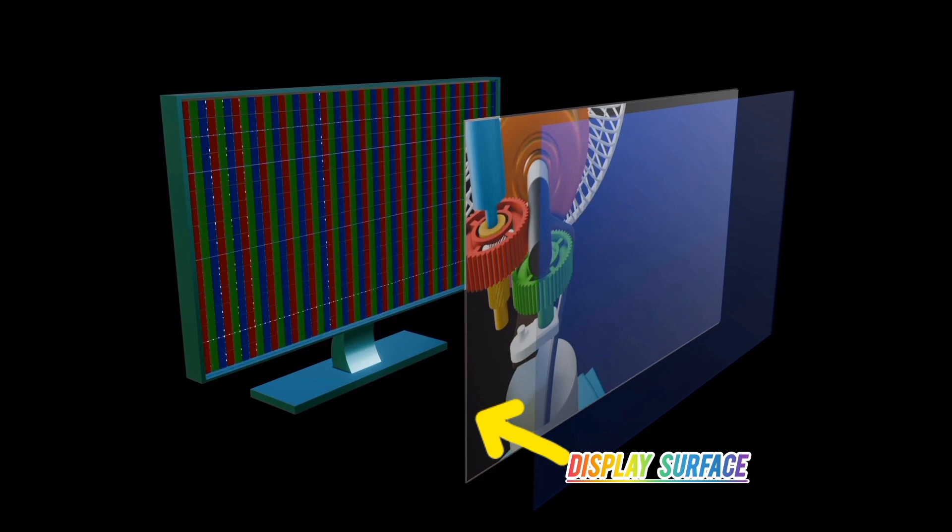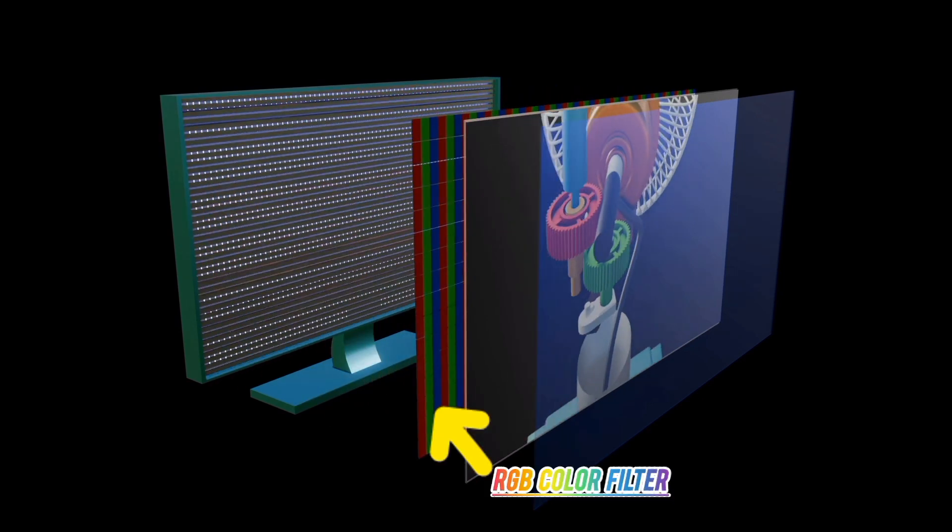Then followed by the RGB color filter. It is responsible for generating color. Each pixel is divided into subpixels with red, green, and blue filters.